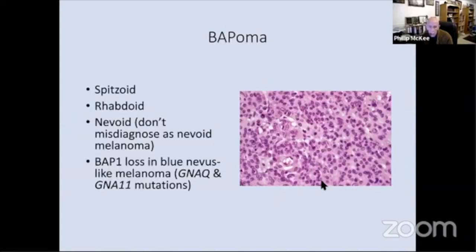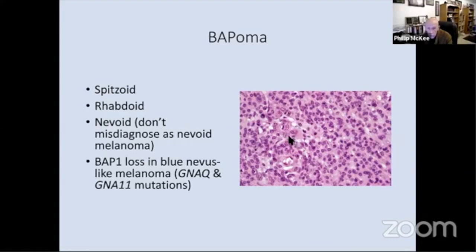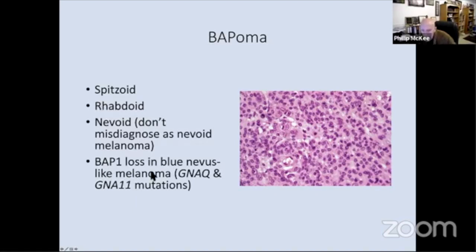Here's an important slide — this is a high power view of my first case. I put this in to remind you that what you sometimes think is a nevoid melanoma may be a BAP1 inactivated nevus. So it's important that you look at BAP1 expression in entities that you think might be a nevoid melanoma before you pull the trigger and make the diagnosis. The histology may be spitzoid, as I've shown you, or it may be rhabdoid. It's also worth noting that BAP1 loss may also be seen in blue nevus-like melanoma.